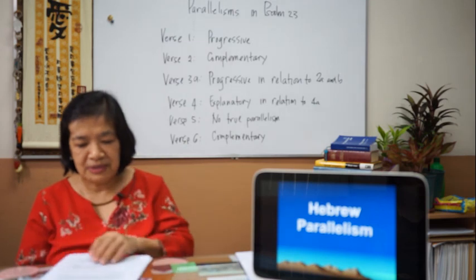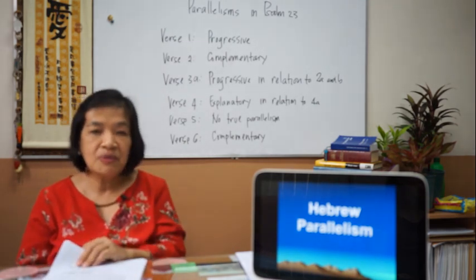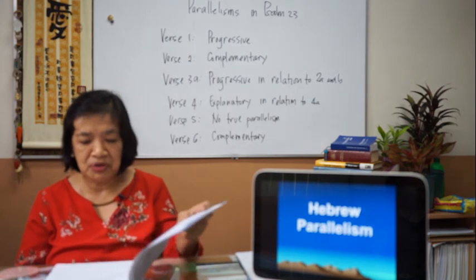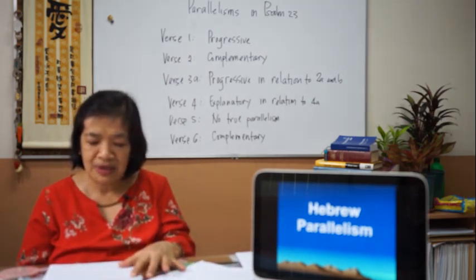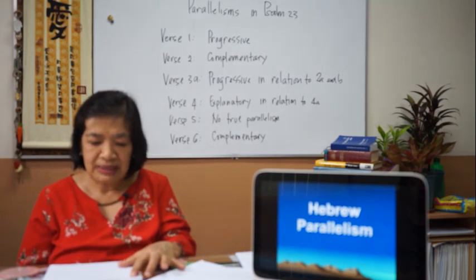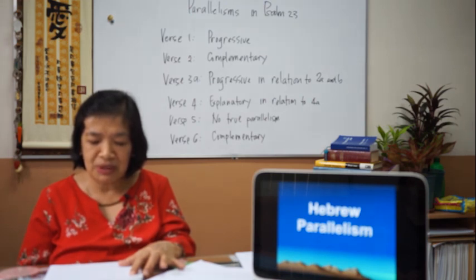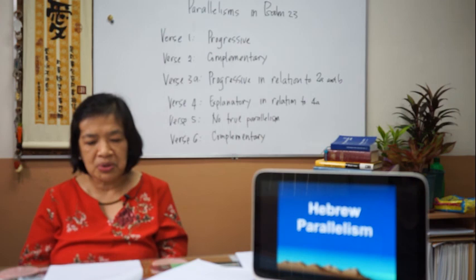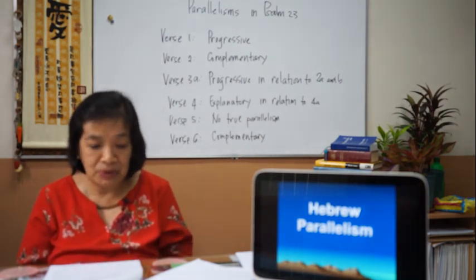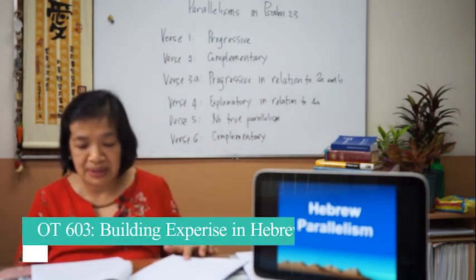So we have covered semantic parallelism, word pairs, and linguistic models. For your exercise, work on the psalm or wisdom book texts assigned to you. Isolate the parallel lines, identify the type of parallelism in each verse, and surface the meaning being communicated. Reflect these observations and discoveries in your exegetical outline and paper — applying what we learned about parallelism.